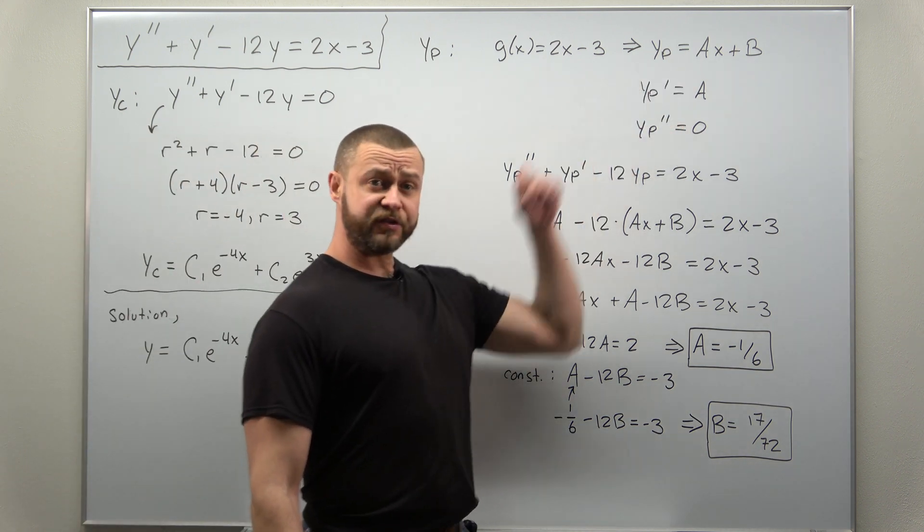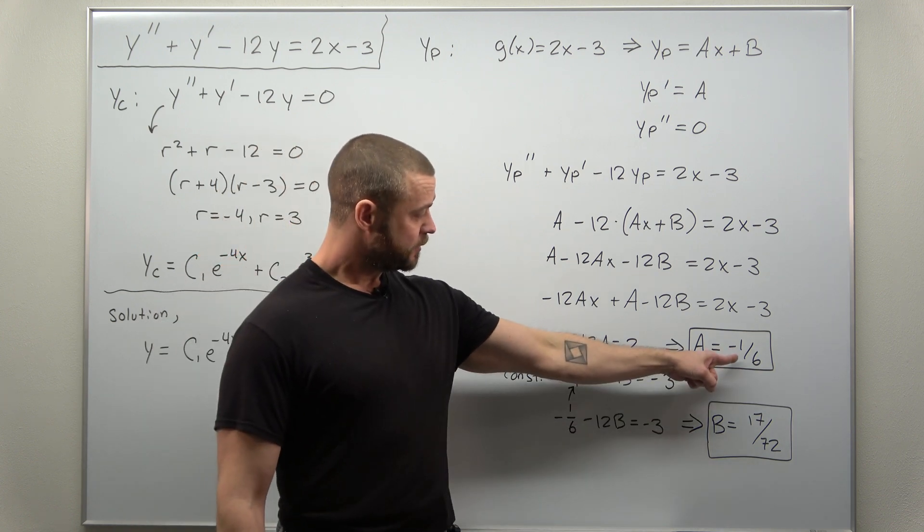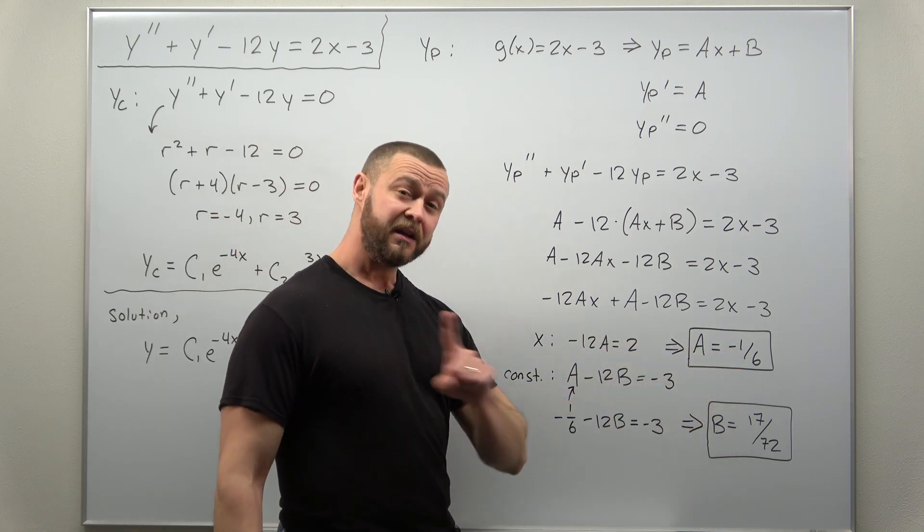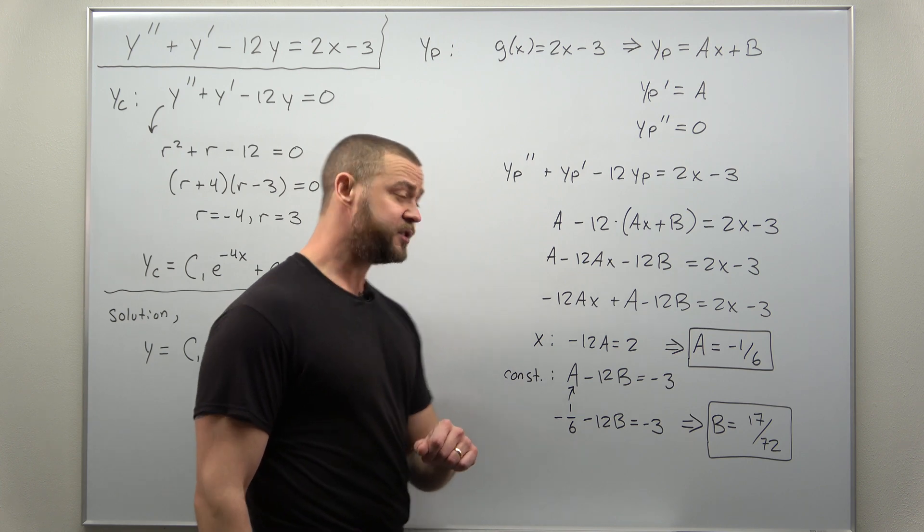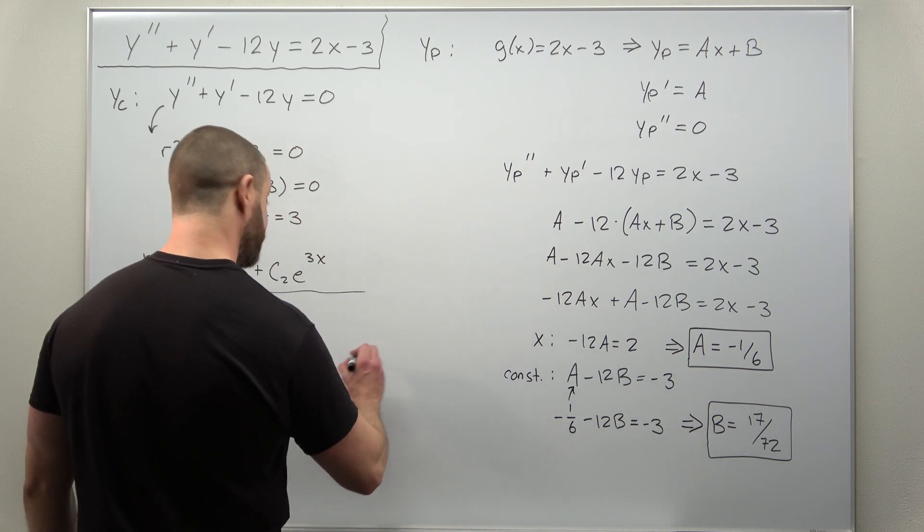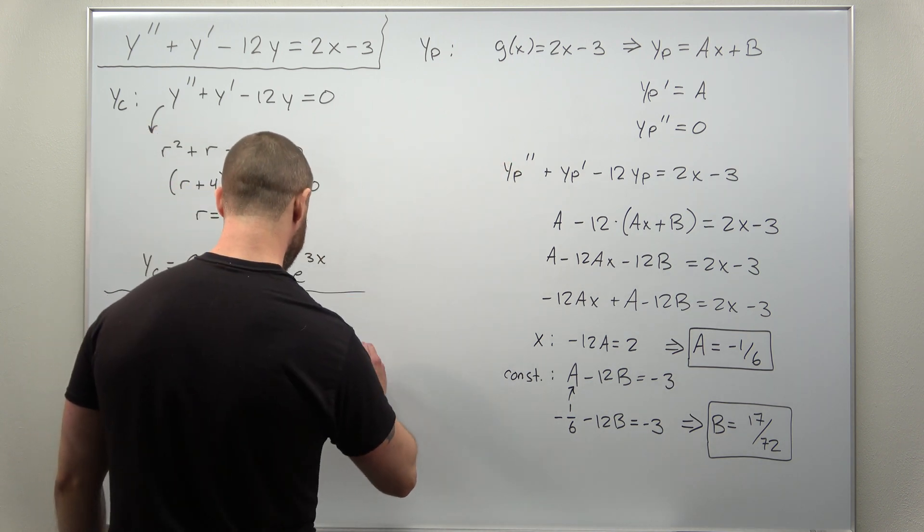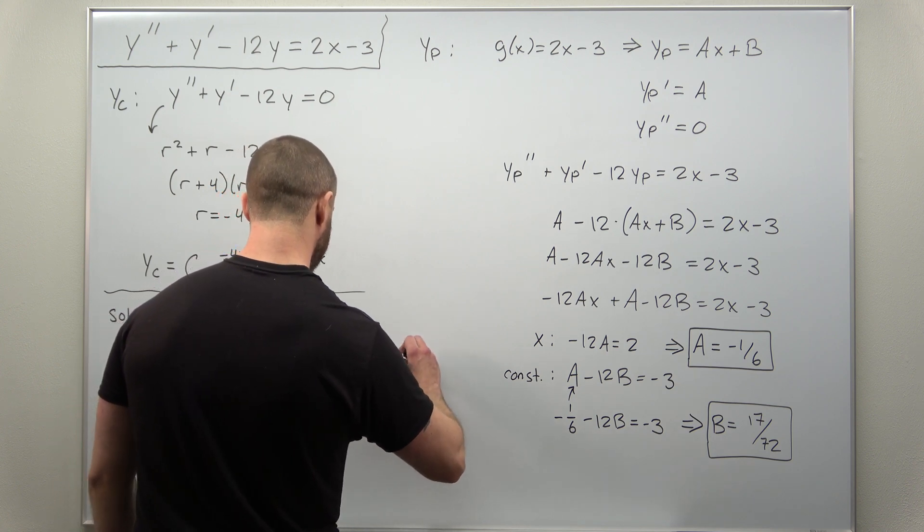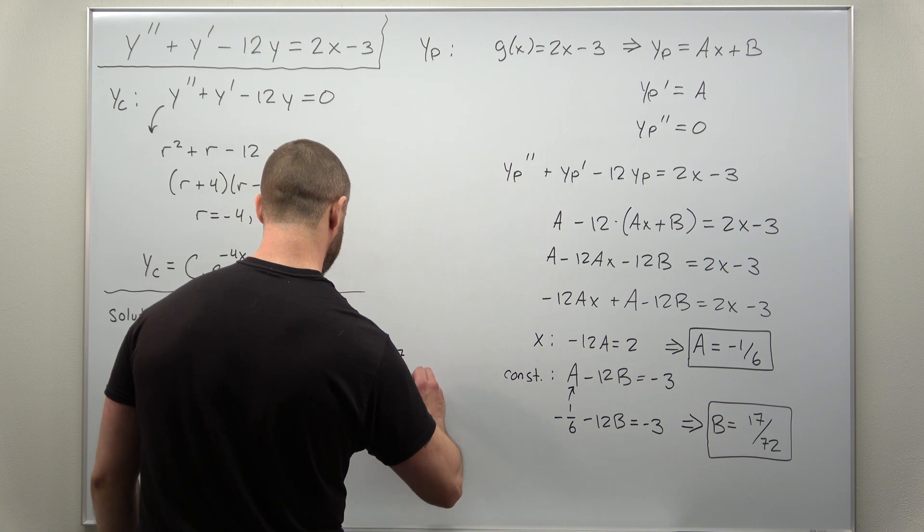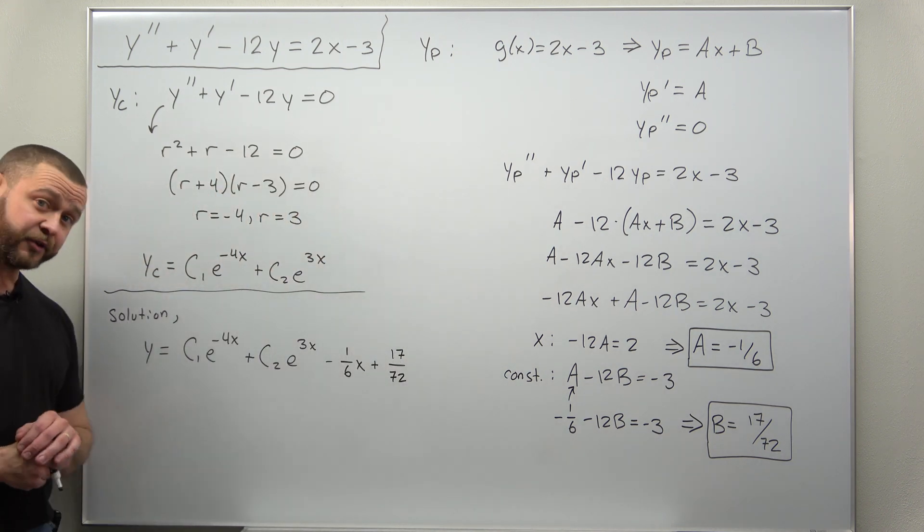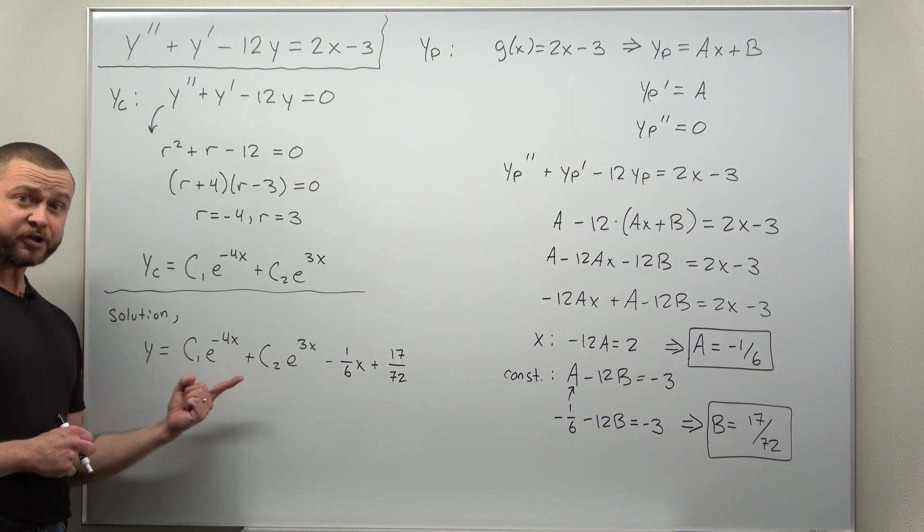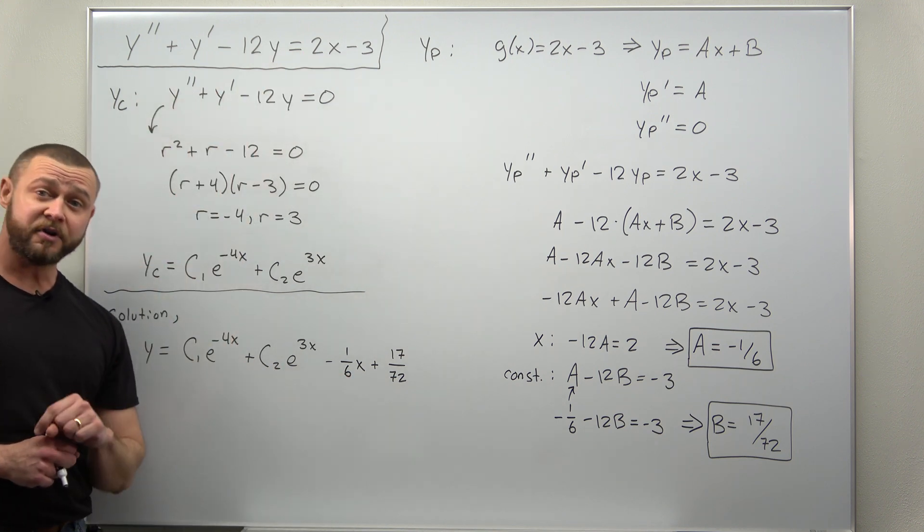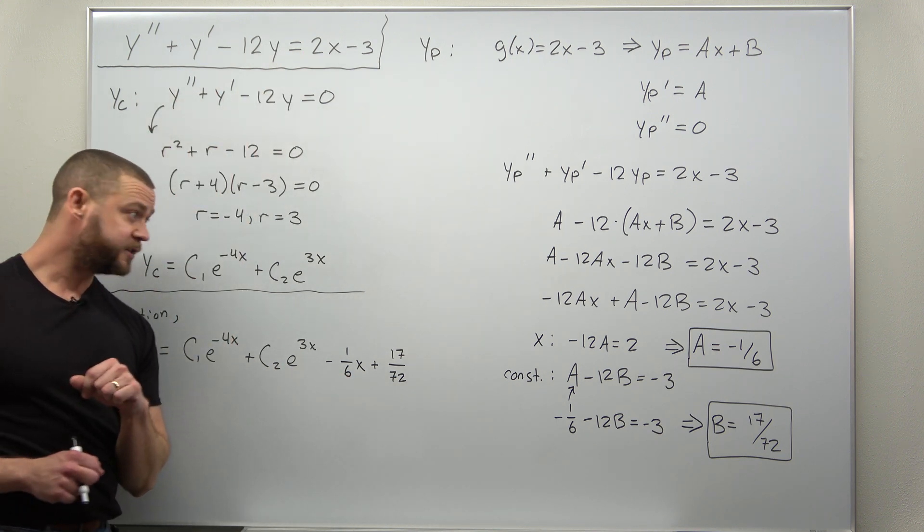Where a is negative 1 over 6 and b is 17 over 72. So if we plug in our values for a and b, we get minus 1 over 6x plus 17 over 72. And that is our full solution to this non-homogeneous ordinary differential equation.